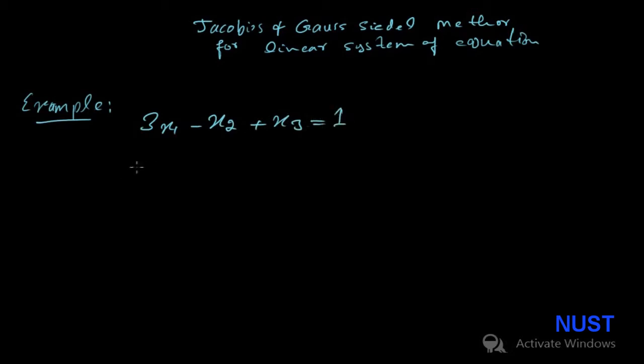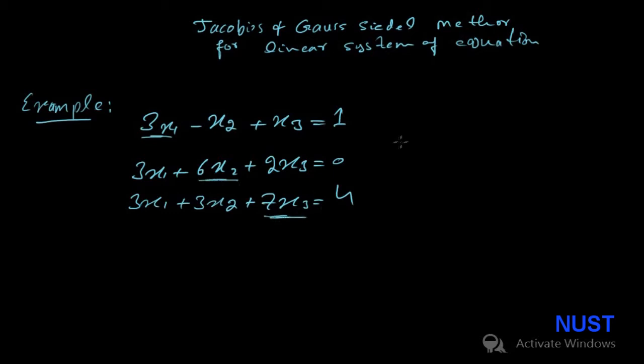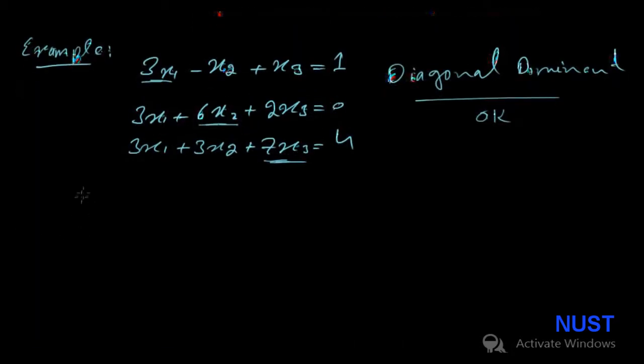So let's consider an example. This is a linear system of three equations with three variables. Make sure that the system is diagonally dominated, which means that the diagonal variables have largest coefficients. Even if it is not, you need to arrange it. So separate the diagonal variables.